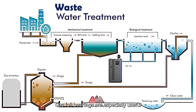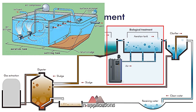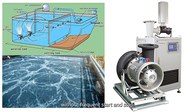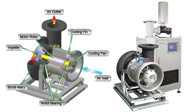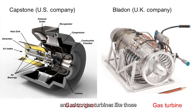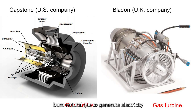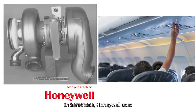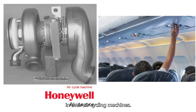Gas foil bearings are especially useful in applications that require continuous long-duration operation without frequent start and stop. Water treatment plants often use them in high-speed blowers. Micro gas turbines, like those in Capstone's power unit, burn natural gas to generate electricity and run for long hours. In aerospace, Honeywell uses airfoil bearings in their air cycling machines.